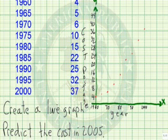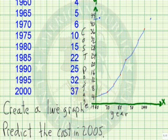We can create a line graph by connecting each of these with a line segment. I'm using a different color to dramatize where the points are that we plotted. The real power comes in — can we predict the cost in 2005? Well, 2005 would be here, so if we extend this graph, and assuming this line is relatively straight, one would predict the number is somewhere around here, so our prediction would be about 42 cents.